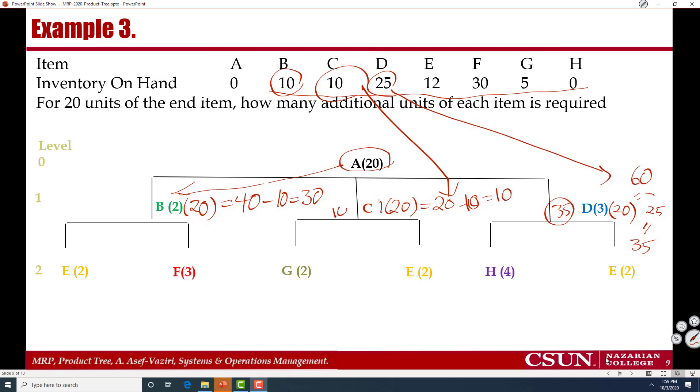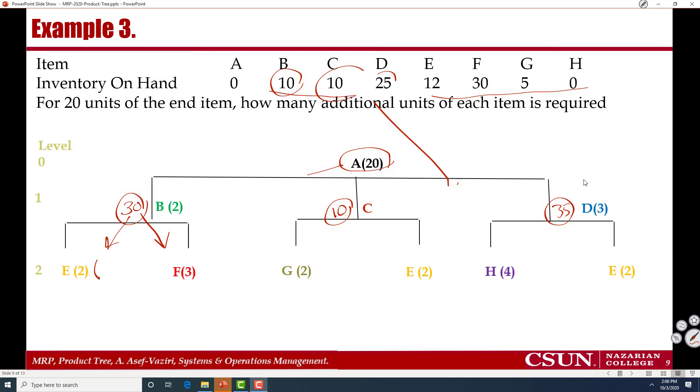I need 10 here, C. And I need 30 here, B. Here I need 30. So that would be 30 times 2, which makes it 60. That would be 30 times 3, which makes it 90.